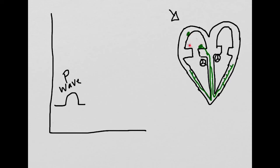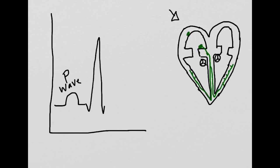The conduction will be going from the SA node to the AV node, causing contraction of the atria on the left and right sides. The next portion of the EKG is the QRS wave. This wave is rather large as it indicates a lot of conduction going through the left and right ventricles of the heart.